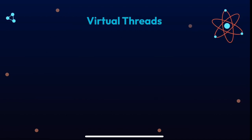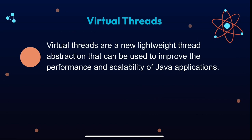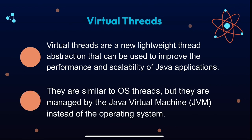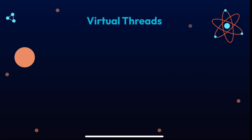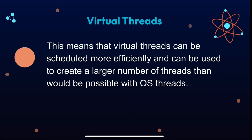First, we'll go through virtual threads. Virtual threads are new lightweight thread abstractions that can be used to improve the performance and scalability of Java applications. They are similar to OS threads, but they are managed by the JVM instead of the operating system. This means that virtual threads can be scheduled more efficiently and can support a larger number of threads than would be possible with OS threads.